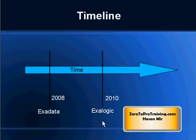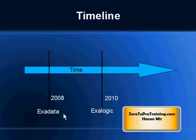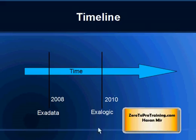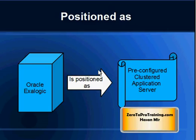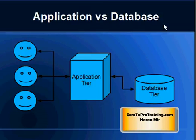In a real short summary, ExaData is a data appliance while ExoLogic is the middle-tier appliance. ExaData is a marriage of a database and hardware, both pre-tuned for each other. ExoLogic is a marriage of the application server and the hardware. On the application server you run applications; on the database server you run the database. Oracle has positioned Oracle ExoLogic as a pre-configured clustered application server.